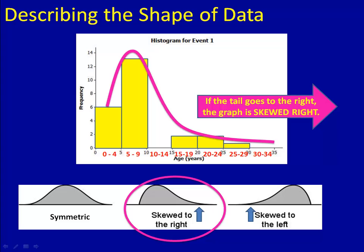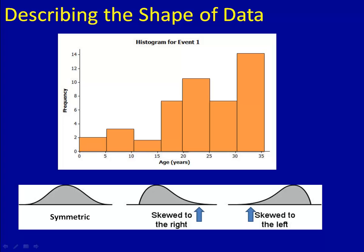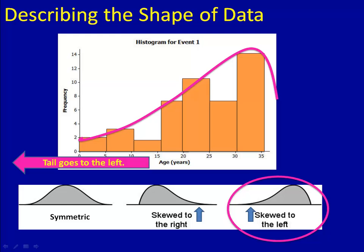If the tail goes to the right, we say that the graph is skewed right. Similarly, suppose we have data that looks like this. Most of the values are on the right-hand side, but there's a few on the left. If I draw that curve over it, notice it looks like this example down on the right. It says skewed to the left. Skewed to the left means there's a few off to the left, but most of them are on the right-hand side of the graph. When the tail goes to the left, we say that it's skewed left.